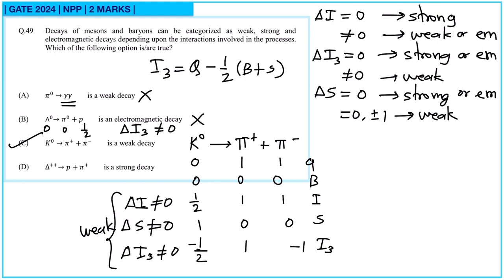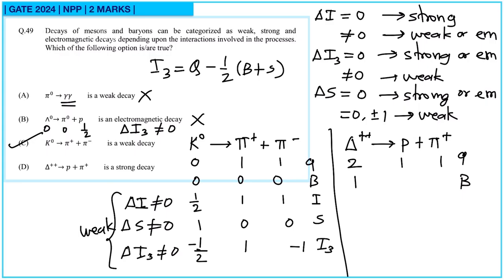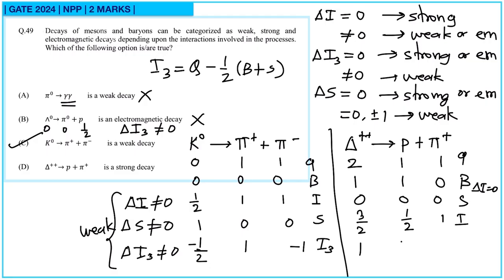For option D — Δ⁺⁺ → proton + π⁺: charge is conserved (2 = 1 + 1), baryon number is conserved (1 = 1 + 0), lepton number is conserved, strangeness S = 0 throughout. Isospin: Δ⁺⁺ has I = 3/2; proton has I = 1/2 and π has I = 1 — ΔI = 0. ΔI₃ = 1 = 1/2 + 1/2, also conserved. Strangeness is conserved. This is a strong decay. So options C and D are correct.